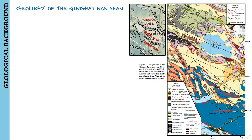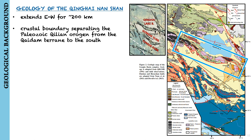The Qinghai-Nanshan is one of the most prominent ranges in the interior of the northeastern Tibetan Plateau. It extends east-west for around 200 km and separates the Gonghe Basin complex to the south from the Qinghai Lake Basin to the north.